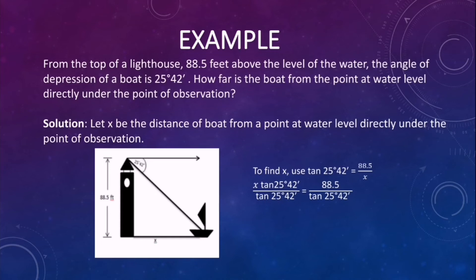Let us divide both sides by tan 25 degrees and 42 minutes to find x. So we will now have 88.5 over tan 25 degrees and 42 minutes. Now solve 88.5 divided by tan 25 degrees and 42 minutes. Your x or the adjacent side would be 183.89 feet.